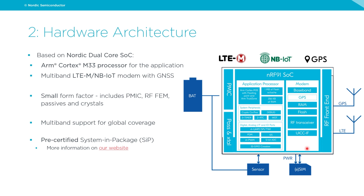We have a very small form factor. The integrated design includes a PMIC, RF front-end passives, and crystals, which simplifies total hardware complexity quite a bit. All you really need to add is a battery, one or multiple sensors, a SIM card, an LTE antenna, and if you want GNSS, a GNSS antenna. We have multiband support for global coverage, and it is a pre-certified system in package.